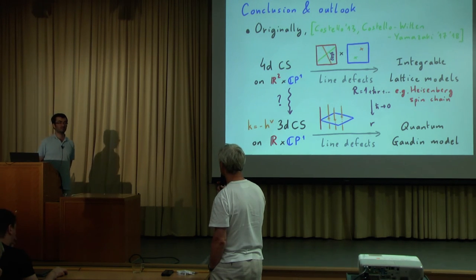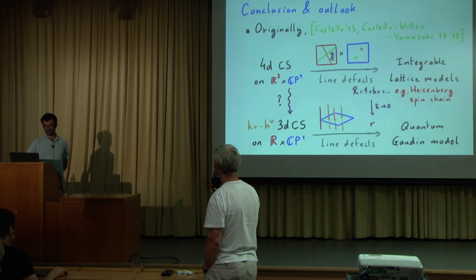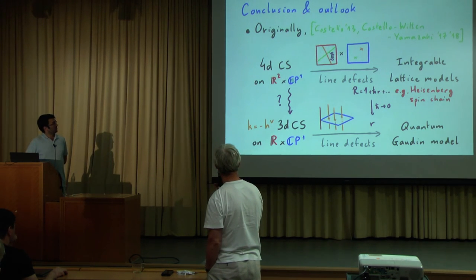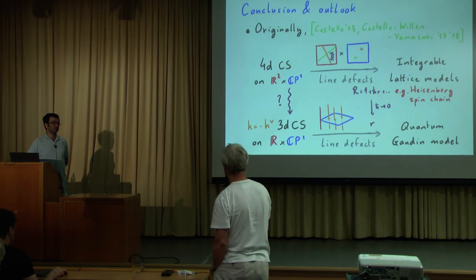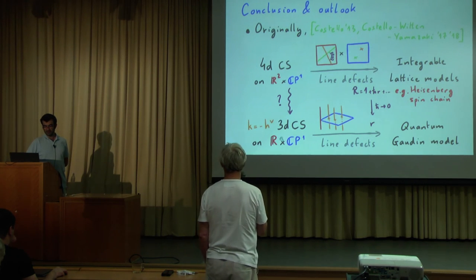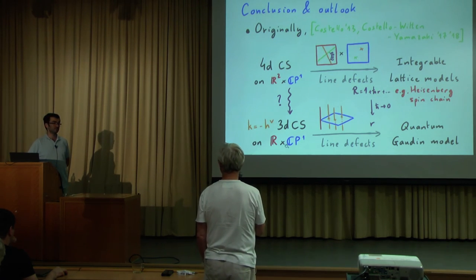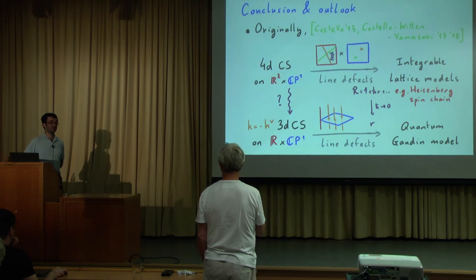Question: Will it generalize to the elliptic case? Response: The elliptic case would be where you take CP1 to be the torus. That's quite possible — in fact, in this story you can do the same thing for any Riemann surface and you get Hitchin systems. And Hitchin systems on tori are elliptic systems.